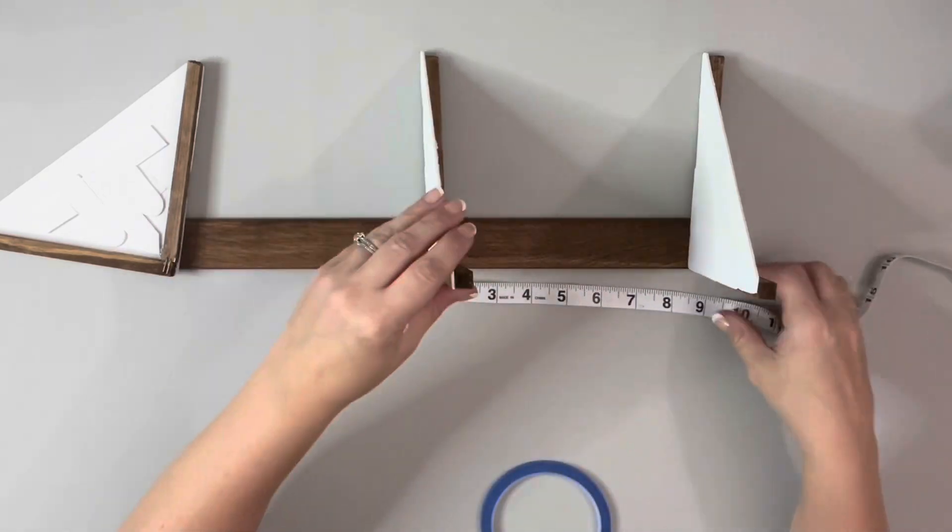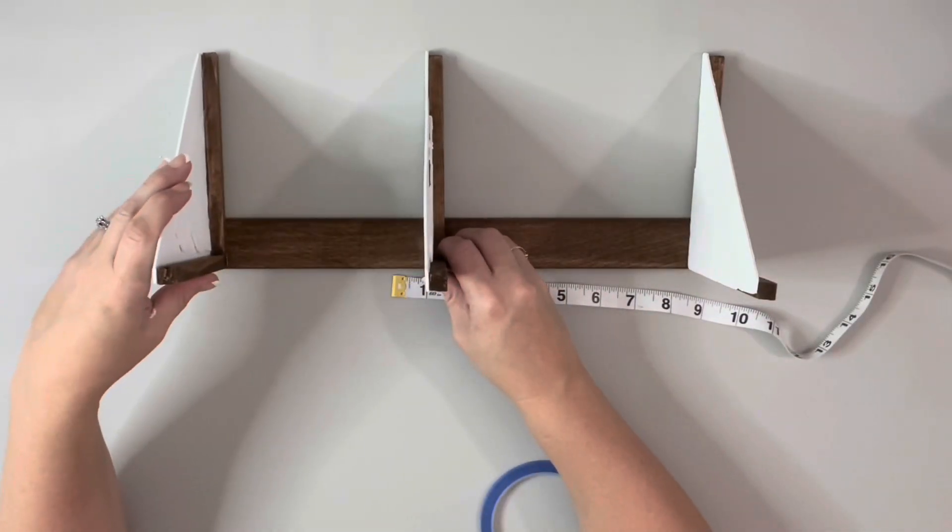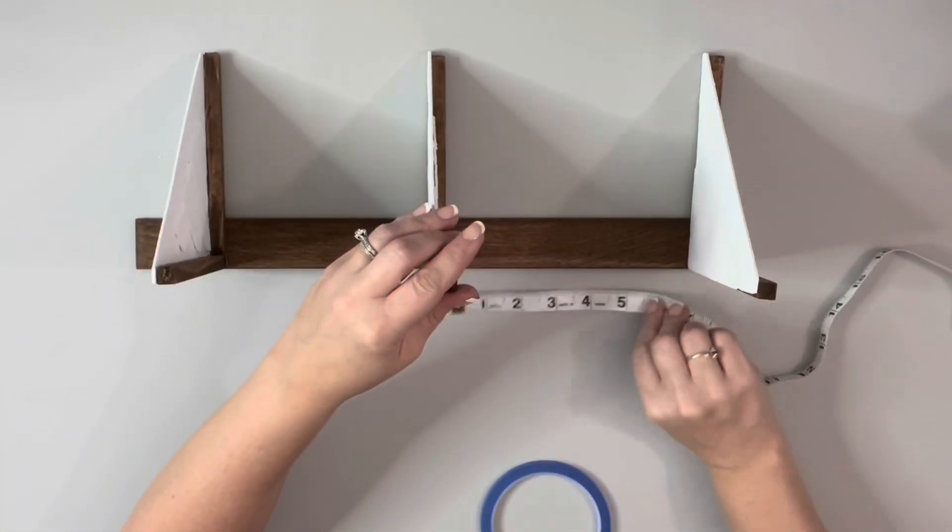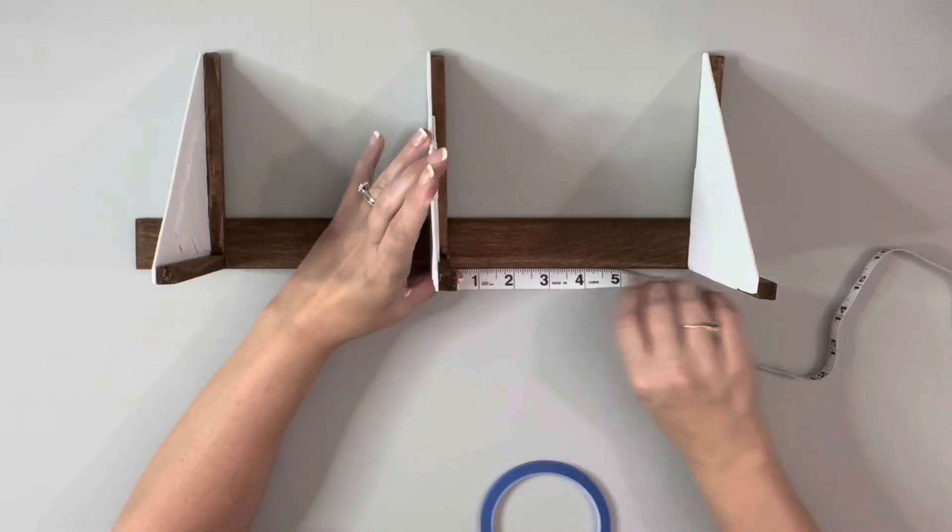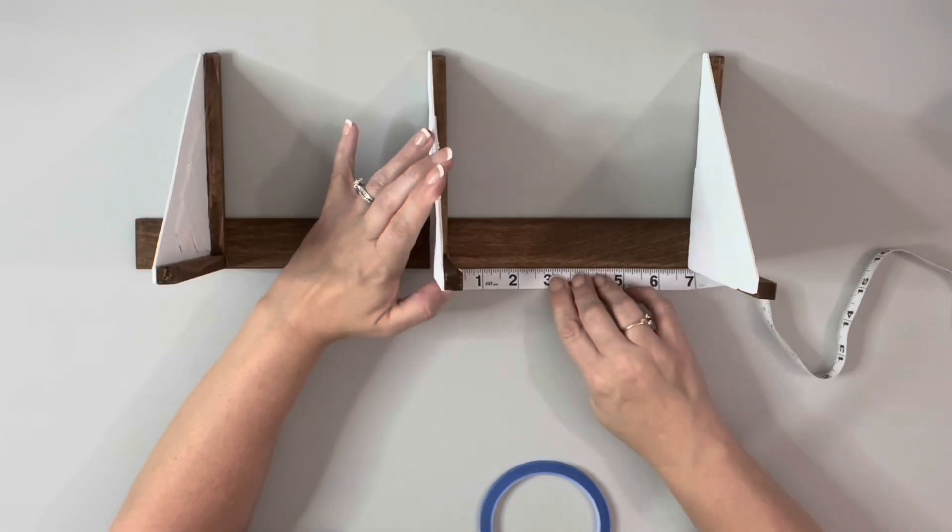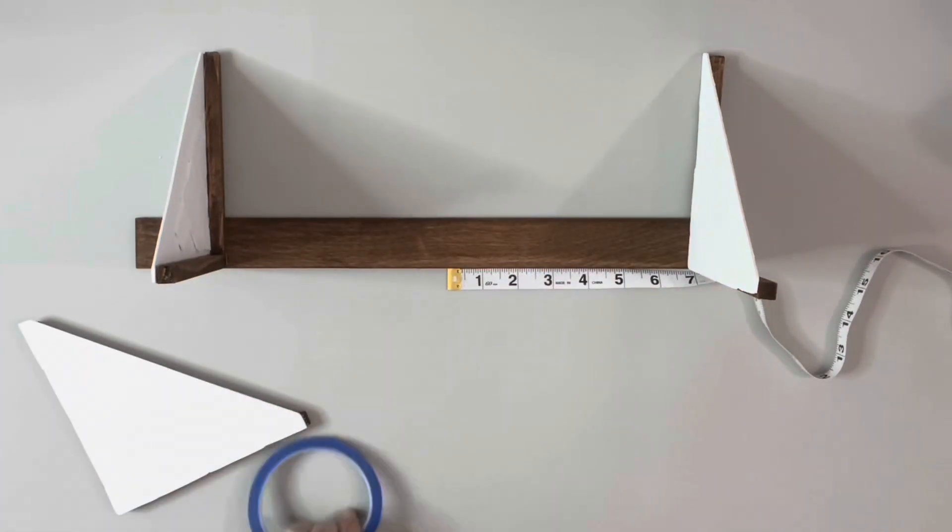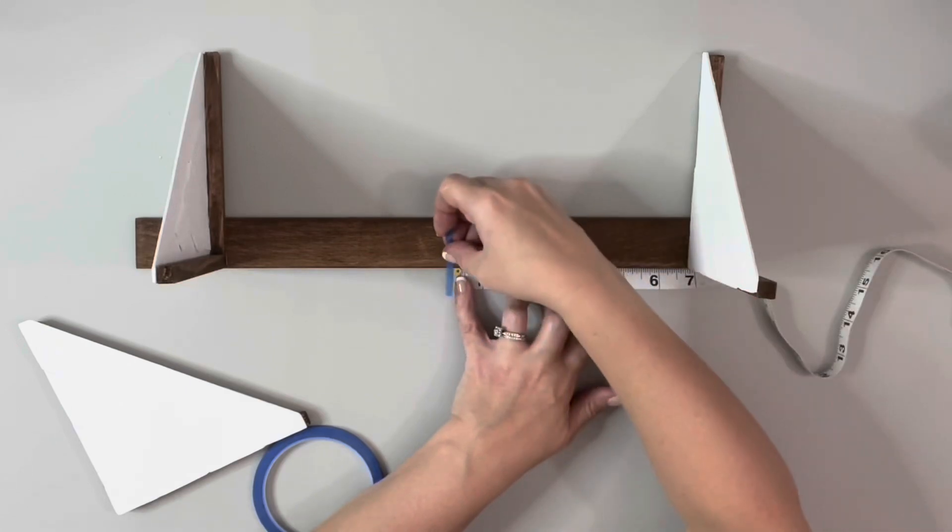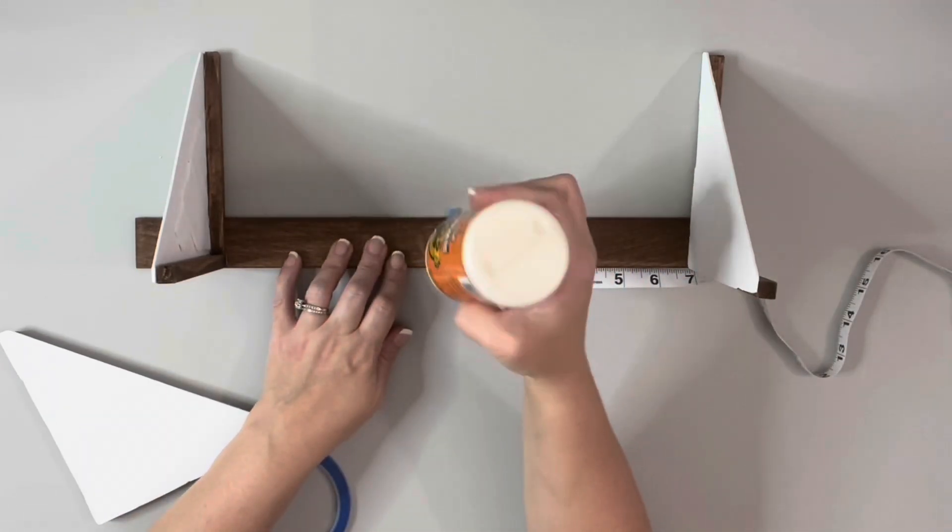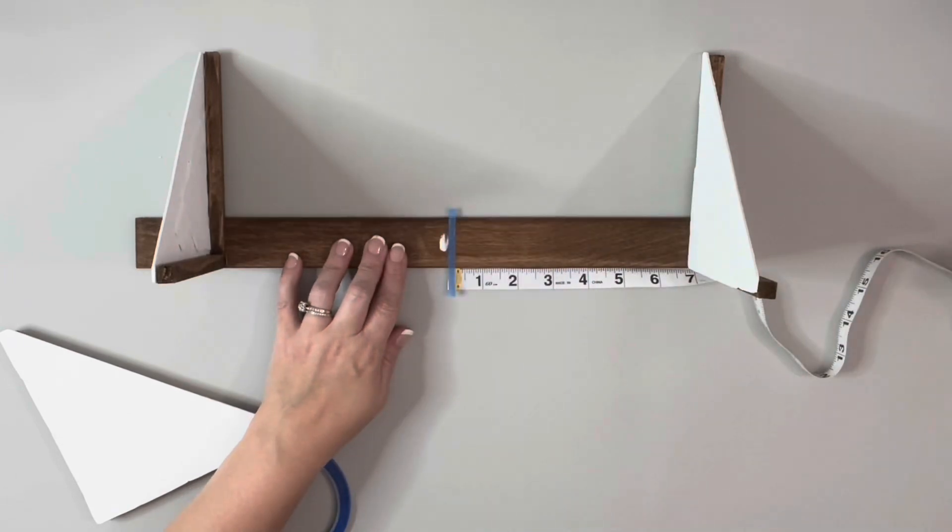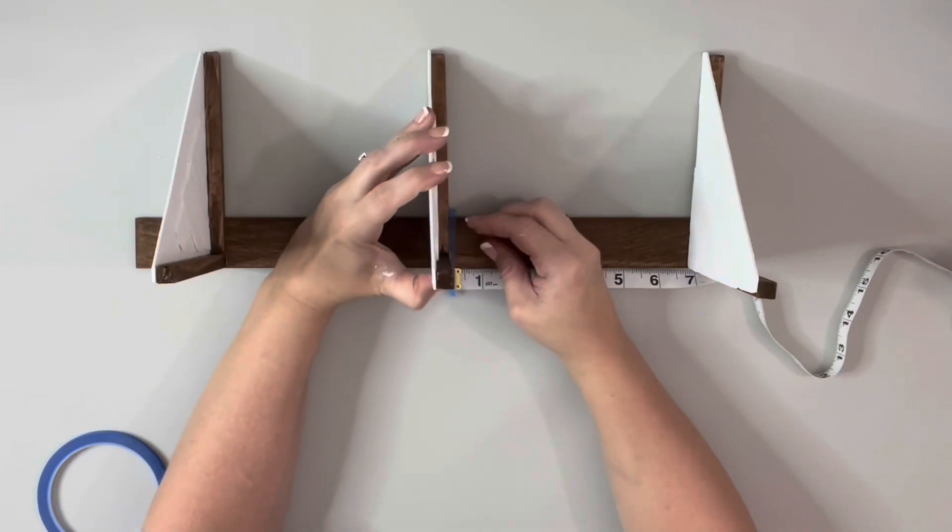Then for the next one, I measured from the top of that bottom shelf and I ended up making my mark at about six and a half inches. So at the six and a half inch mark, I placed down my painter's tape, and then again doing the same thing, the wood glue and hot glue. Then the third shelf, I measured and glued six inches from the middle shelf.